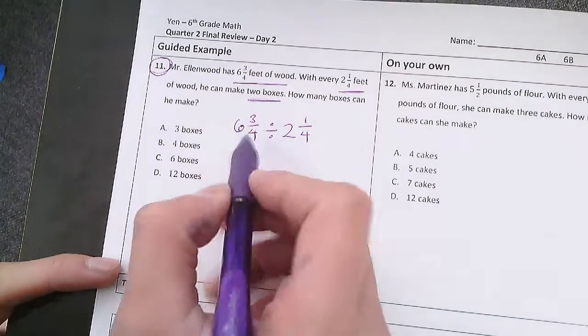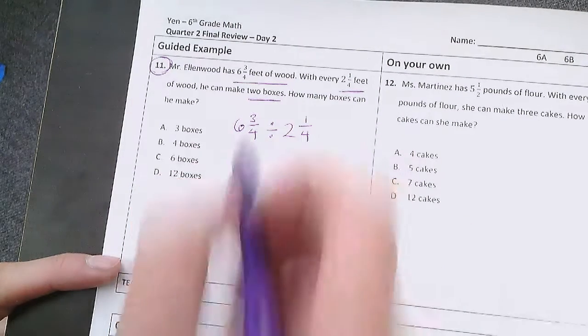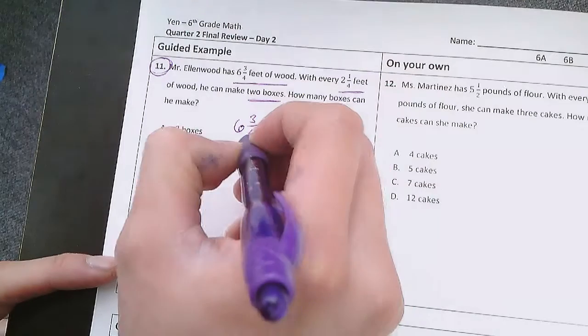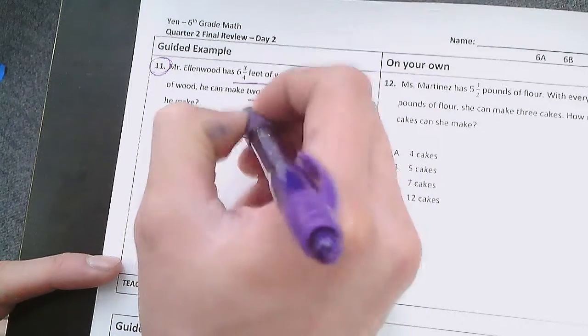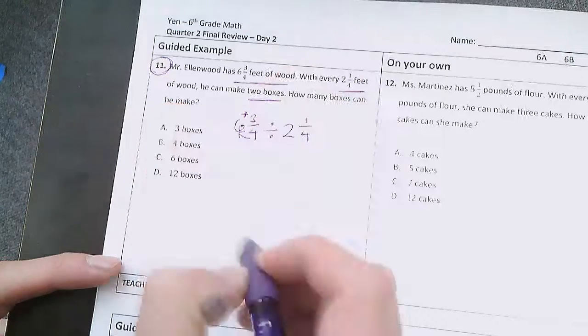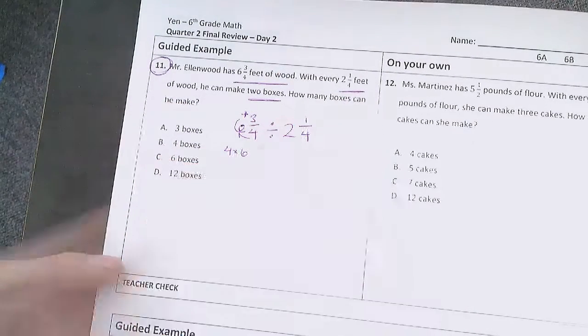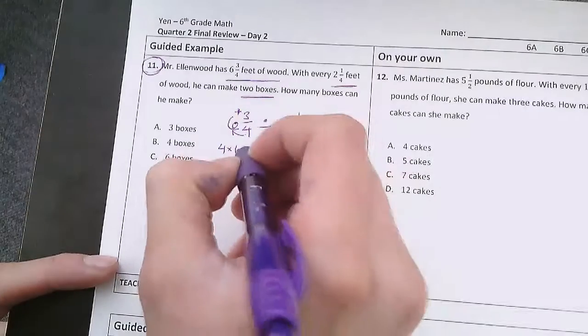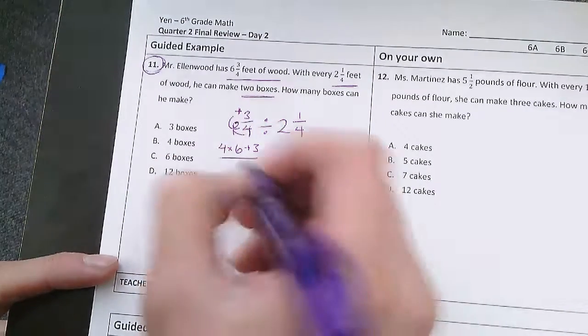Anytime we're dividing with mixed numbers we want to turn these mixed numbers into improper fractions. So let's do that for both of these. Remember you multiply the denominator times the whole number and then add it to the numerator. So here we would have 4 times 6 plus 3, all of that over this original denominator which was 4.